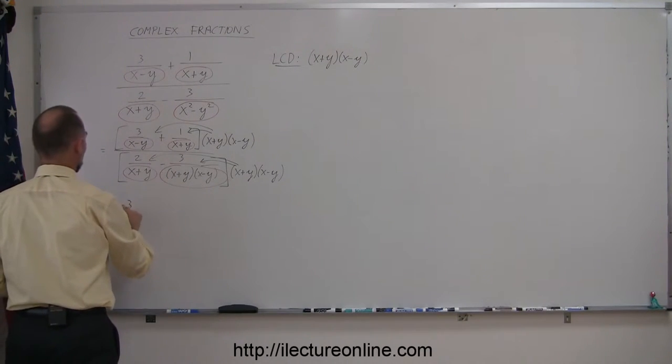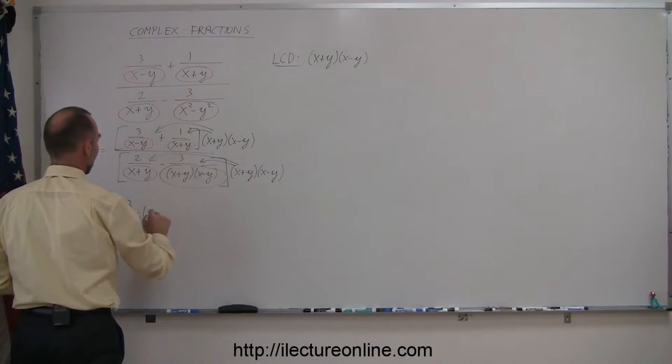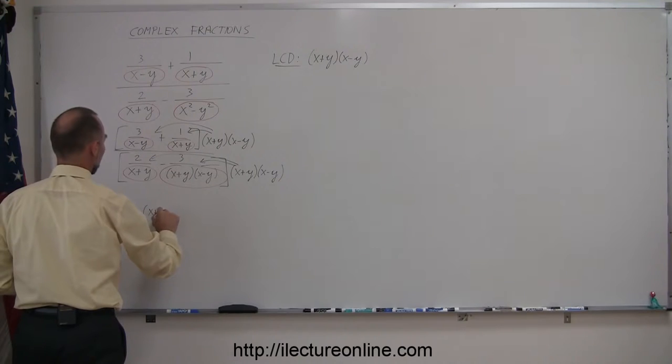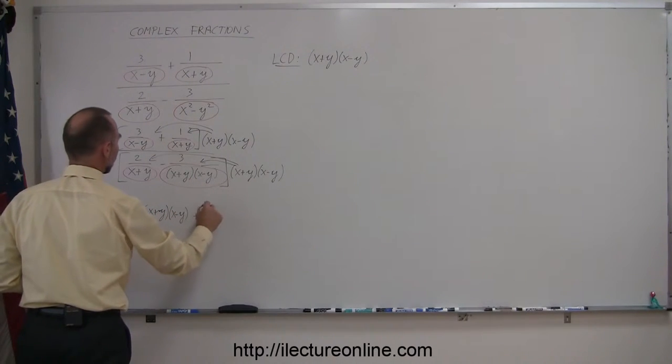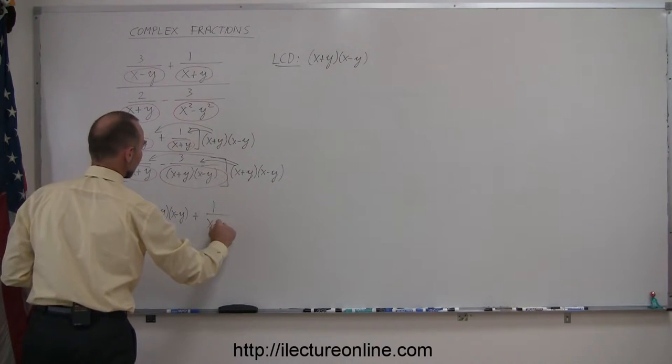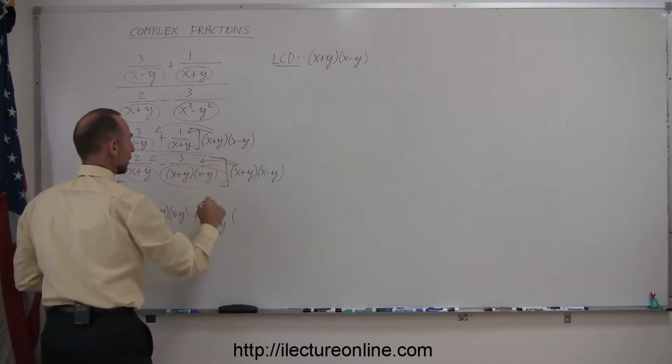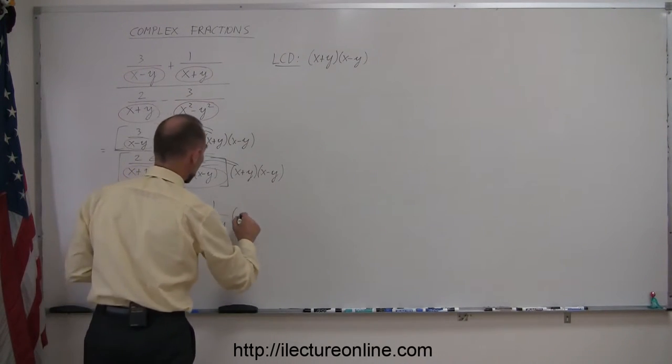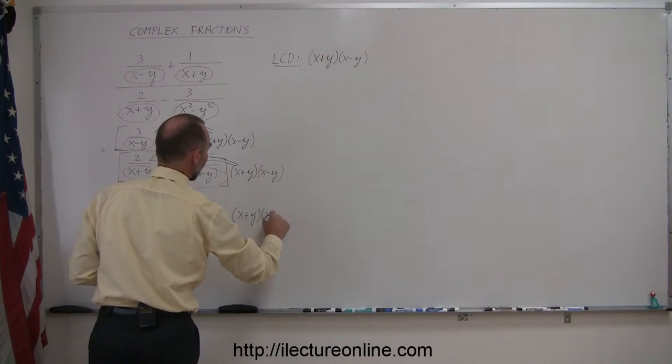So I'm going to write it out, so this becomes 3 over x minus y times x plus y, plus 1 over x plus y times the common denominator, or the lowest common denominator of x plus y times x minus y.